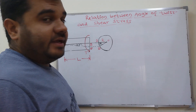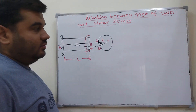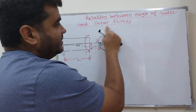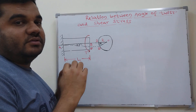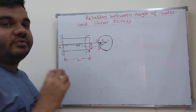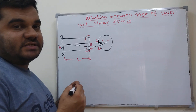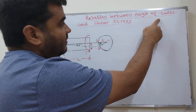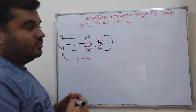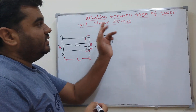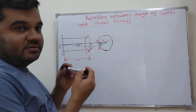In this video we will derive the relation between the angle of twist and shear stress. These come into picture when a shaft is subjected to torsion, twisting moment, twisting couple, or torque. In the previous video I defined what is meant by angle of twist and shear strain. Now we will derive the relation between shear stress and angle of twist. For that, first we need to consider a solid circular shaft.